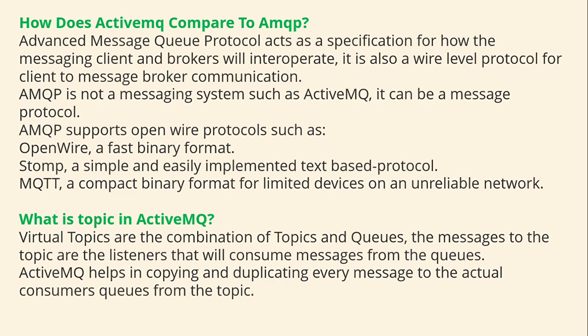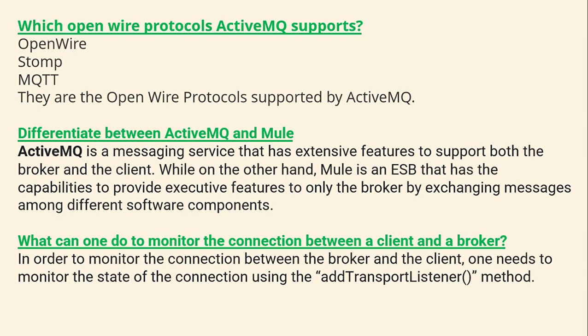What is a topic in ActiveMQ? Virtual topics are a combination of topics and queues. Messages sent to these topics are consumed from the queues, and ActiveMQ copies and duplicates every message from the topic to the actual consumer queue. The open wire protocols supported by ActiveMQ include STOMP and MQTT.